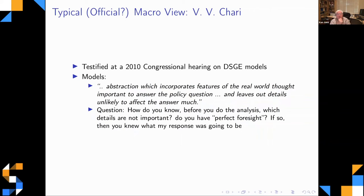Vivi Chari is a professor at the University of Minnesota and is affiliated with the Minneapolis Fed. In 2010 there was a congressional hearing on DSGE models — yes, Congress investigated DSGE models. It was partly a bureaucratic show-and-tell, but five macroeconomists were invited to speak about DSGE models. Most were hostile; Solow was particularly hostile. Chari was appointed to defend DSGE models.